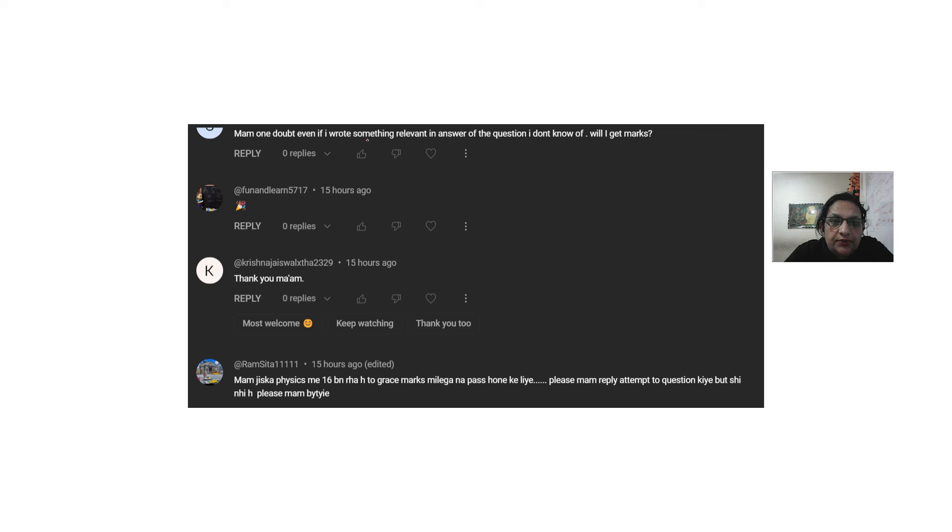Ma'am, one doubt. Even if I wrote something relevant in the answer, I don't know. If you wrote something relevant, then the teacher will give you a number. Because the teacher also wants to pass the child. So don't pass the child. If you have 5 marks, your attempt is actually 2.5 marks, then the teacher will give you 3.5 marks. It's a liberal marking. Thank you so much, ma'am.